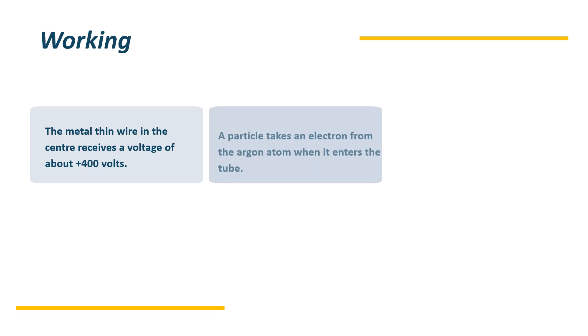How is the working? A metal thin wire in the center receives a voltage from the source which will be near about 400 volts. A particle takes an electron from the argon atom when it enters the tube.